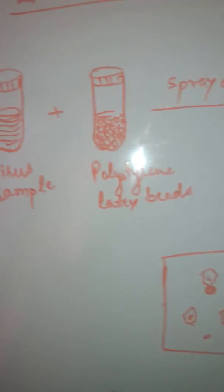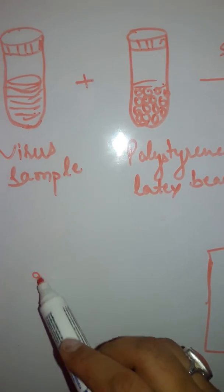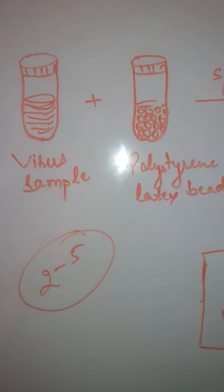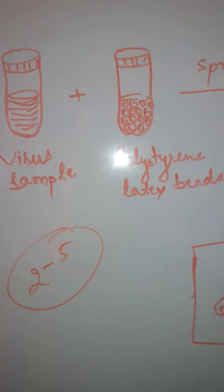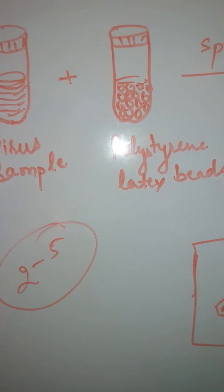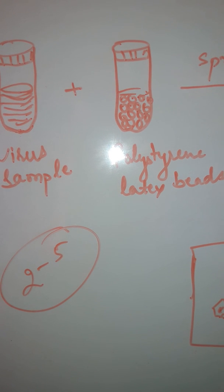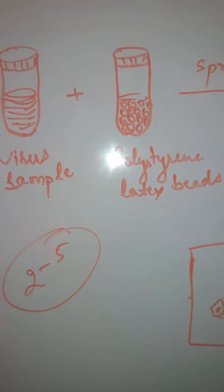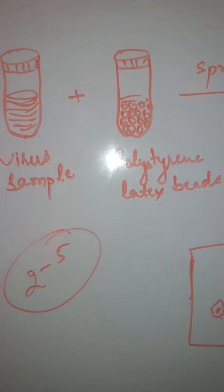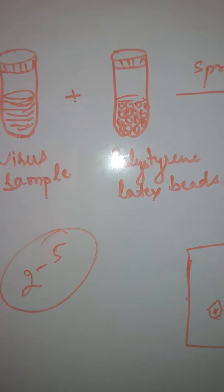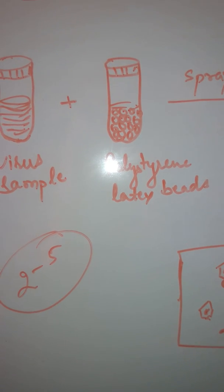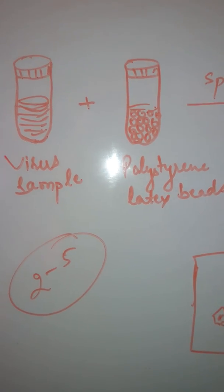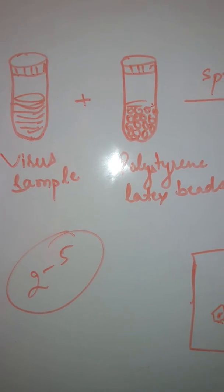After some specific dilution — suppose 10 to the power minus 5 — virus particles will not get bound to the latex beads, because as dilution increases, the concentration of virus decreases. So at that point, this is called the endpoint of the dilution.